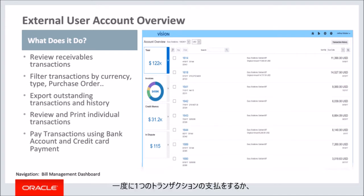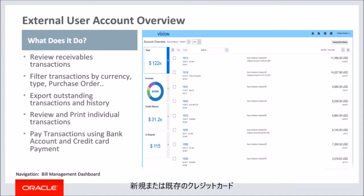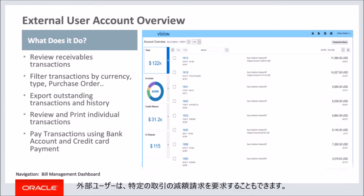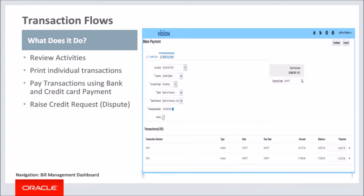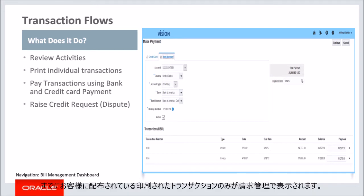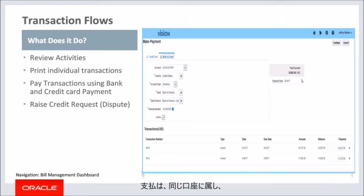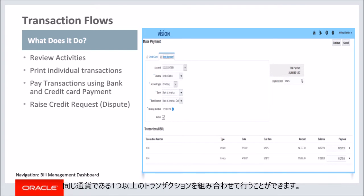External users can pay transactions one at a time or group them together by currency. Payments can be made using a new or an existing credit card or through a bank account. External users can also request credit for a particular transaction. Users can review activities such as payment, dispute, and adjustments on a transaction. Users can print a specific transaction by selecting it. Only printed transactions which are already delivered to the customer are visible in bill management. Payments can be made by combining one or more transactions that belong to the same account and in the same currency.